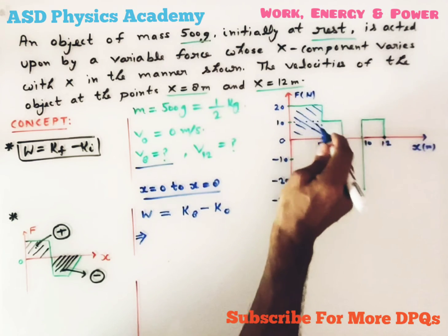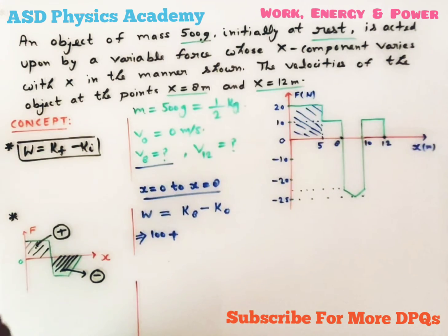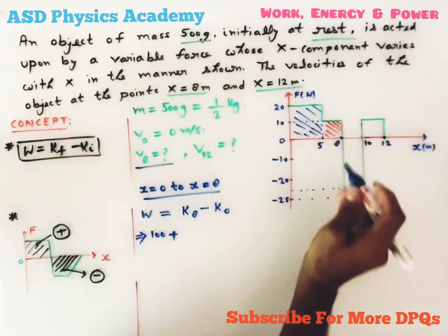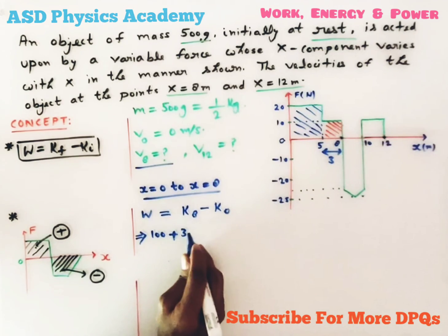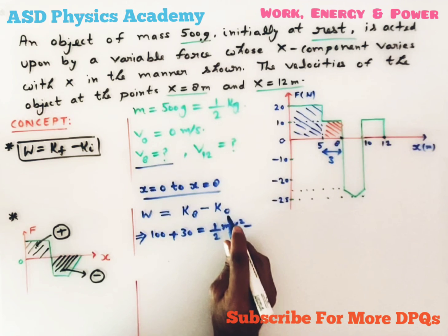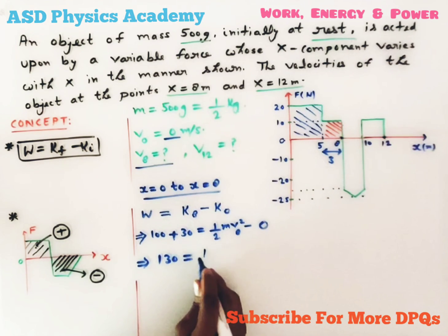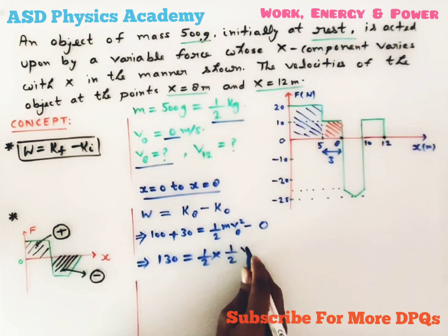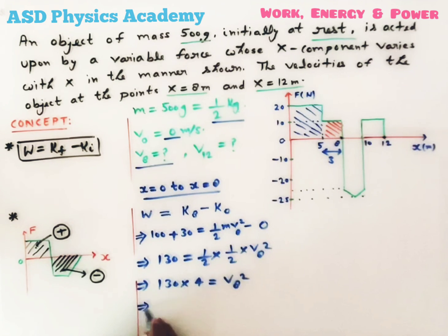Looking at the curve, this area is 20 into 5 equals 100, plus this next area which is 10 into 3 equals 30, giving total work done of 130 joules. This equals k8 minus k0, which is half m v8 squared minus 0, since initial velocity is zero. So 130 equals half times 0.5 kg times v8 squared. After cross multiplication: v8 squared equals 130 into 4, giving v8 equals square root of 520.